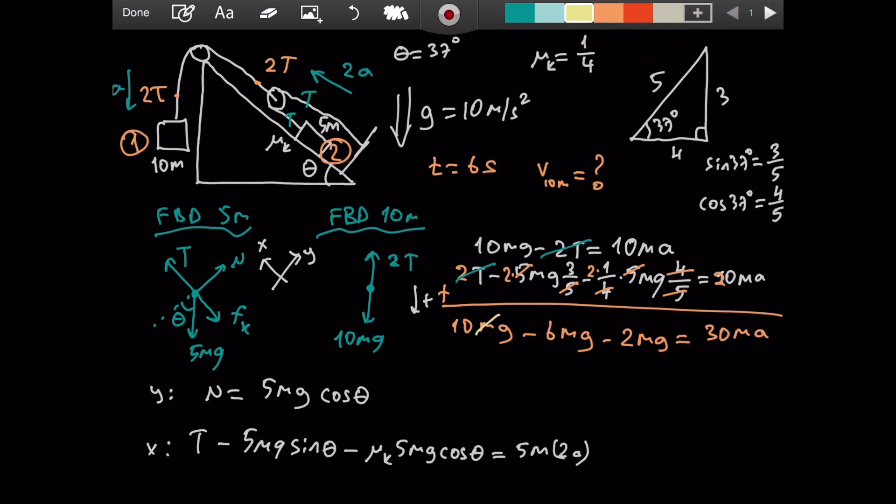Masses cancel. That's always nice. On the left, then, we have 10 minus 8, 2g equaling 30a. So, the acceleration is going to be equal to 2g divided by 30. And what was g? I said it here. It is 10. So, we have 20 divided by 30. That is 2 over 3 meters per second squared.